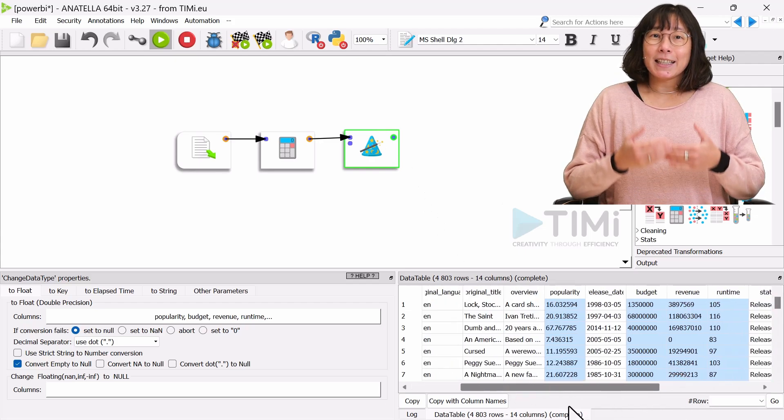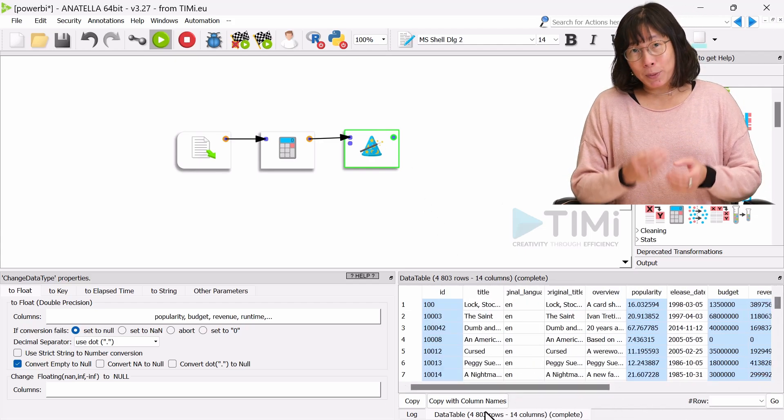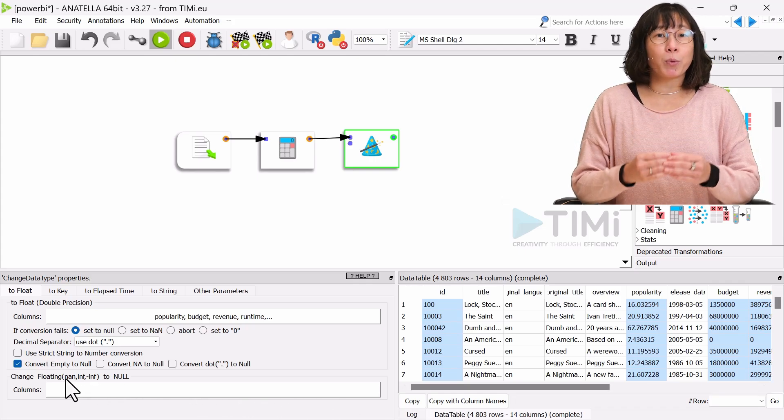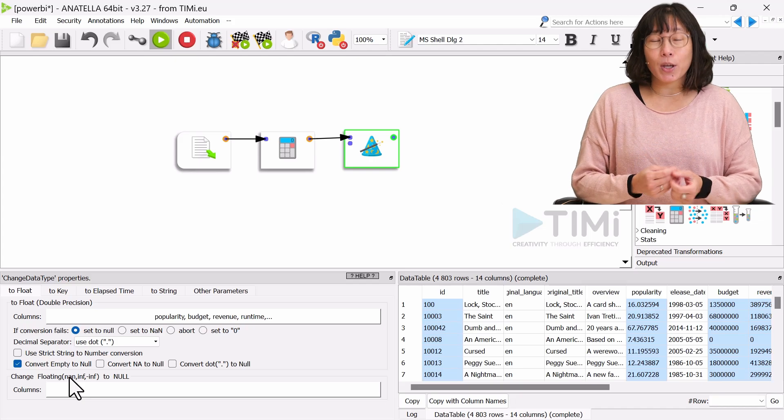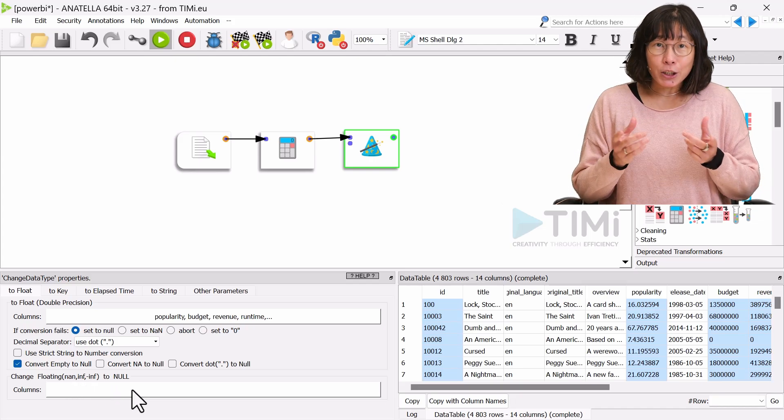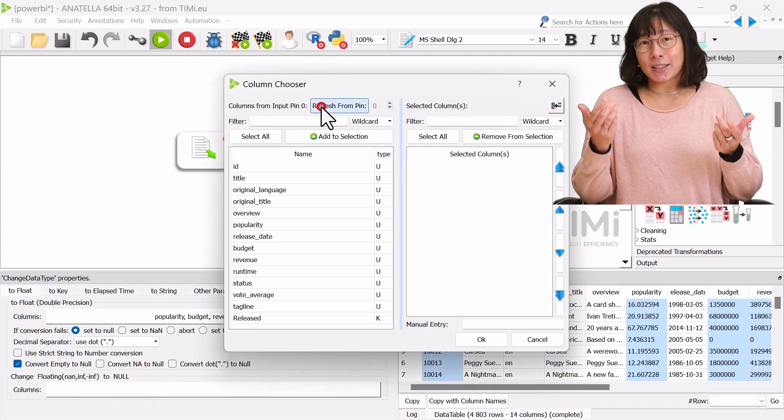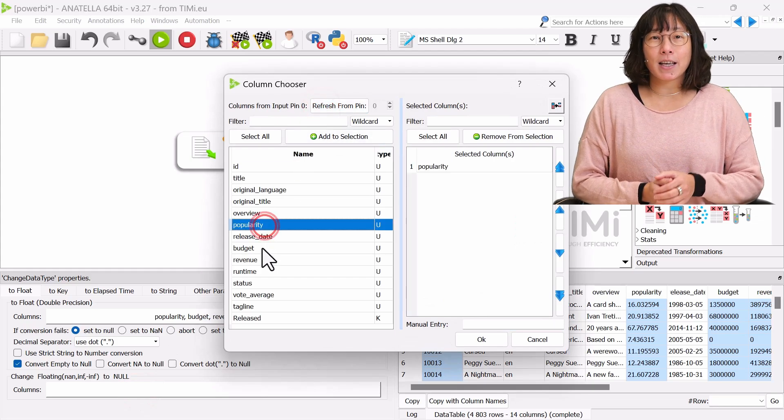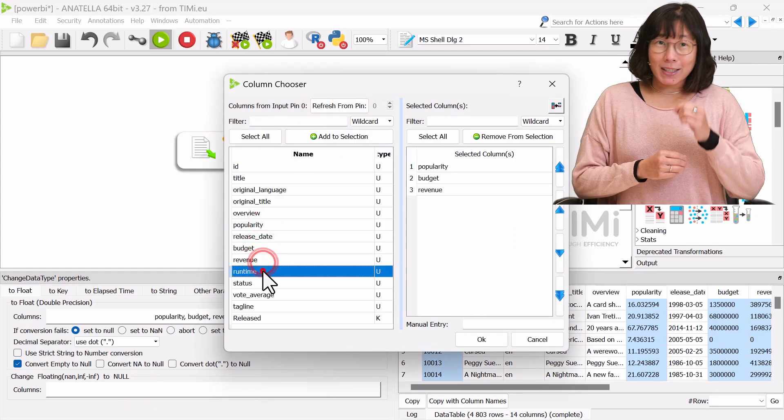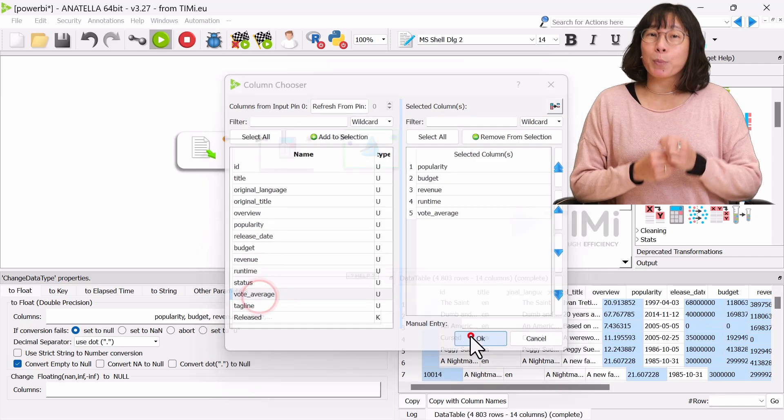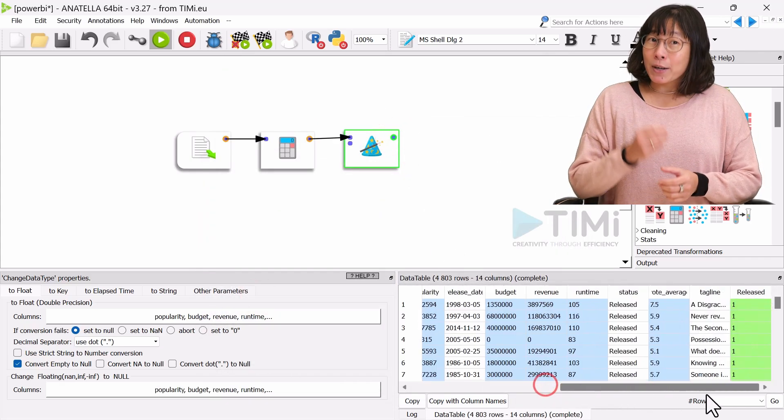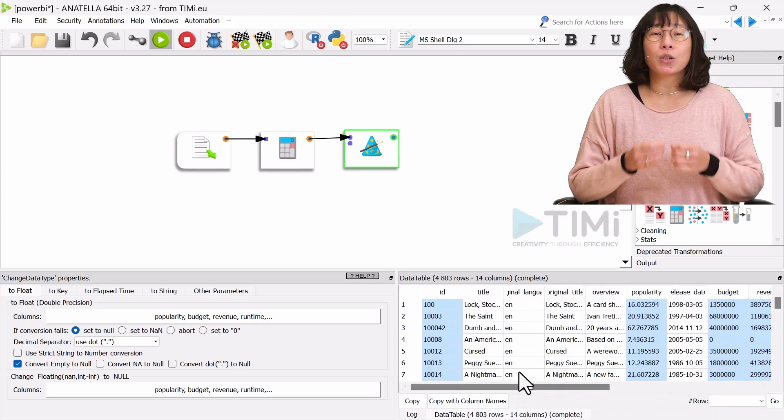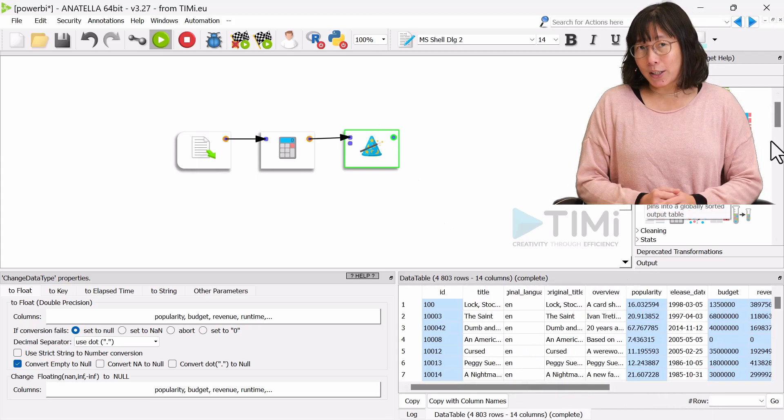Additionally, it is important to note that Power BI does not support the special floating point values NaN, not-a-number, and infinity. Therefore, these values also need to be converted to null in the dataset. This step is essential to ensure the data is properly processed and analyzed in Power BI, as the presence of these unsupported values could lead to errors or incorrect calculations.